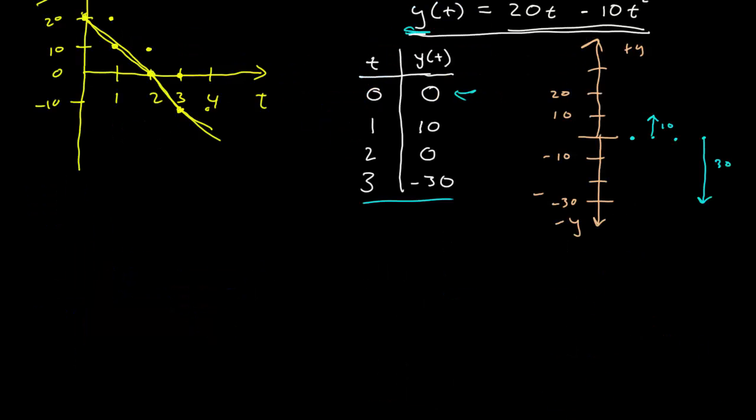If we were to look at a graphical representation of this one, at t equals 0, I have the zero vector. At t equals 1, it's at 10. At t equals 2, it's at 0 again. And t equals 3, it's at negative 30.